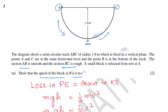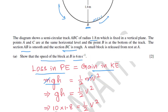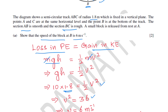Using the energy principle, loss in potential energy equals gain in kinetic energy. Cancelling mass: gh equals half v squared. Substituting g equals 10 and h equals 1.8 (the radius, which equals the height), gives 10 times 1.8 equals half v squared, so v squared equals 2 times 10 times 1.8 equals 36, therefore v equals 6 meters per second.